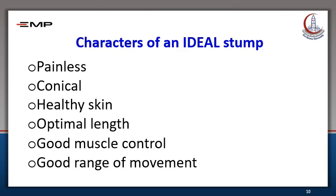The ideal stump should be painless, conical in shape, covered with healthy skin, of optimal length, have good muscle control, and a good range of movement to move the prosthetic limb effectively.